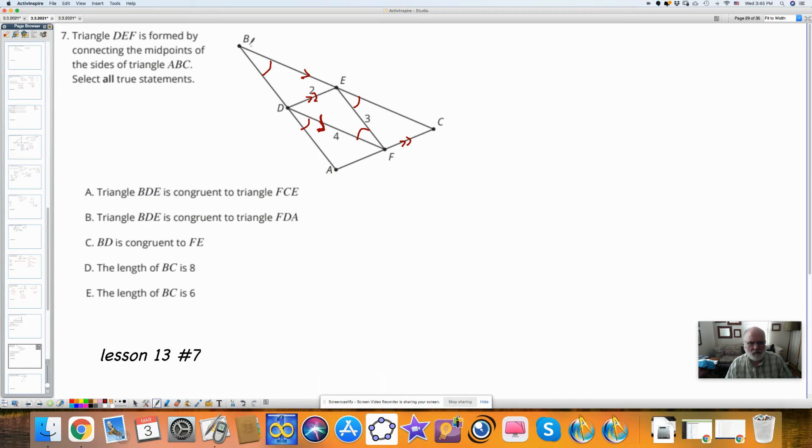Triangle BDE is congruent to triangle FCE. BDE, FCE, the letters have to match up. They don't. BDE would match up with, would be congruent to triangle EFC. So this is not true. BDE is congruent to triangle FDA. No, it would be congruent to triangle DAF. So this is not true.